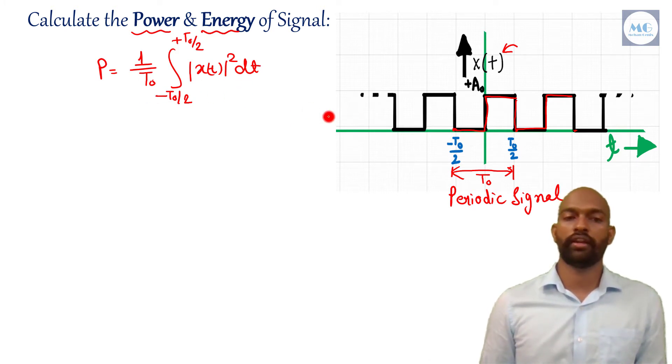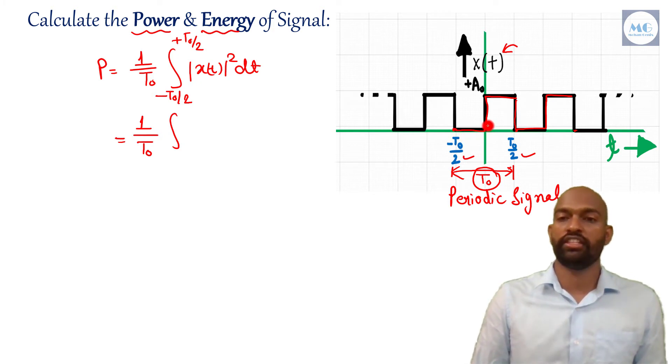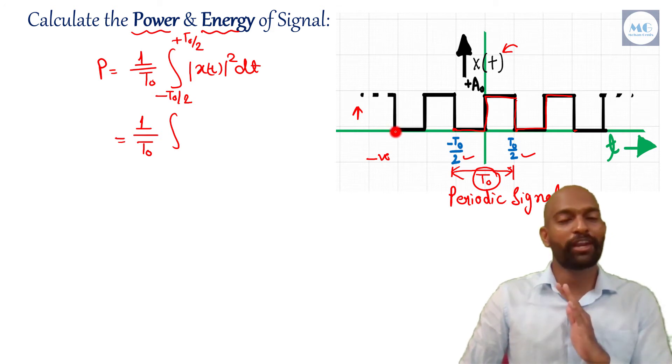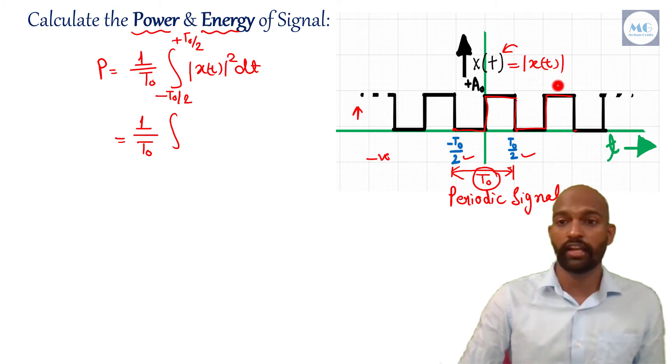Now we have to apply this formula here. Here t0 is same as this t0, that means fundamental time period is t0 only as given in this question, minus t0 by 2 plus t0 by 2. So in place of t0, we just have to write t0. And from minus t0 by 2 to plus t0 by 2, what is the value of mod of xt? We have to find mod of xt. We just have to shift our signal from negative axis to positive axis. But this signal is already in positive side, so here we don't have to do anything. That means xt is equal to mod of xt for this signal. So focus on this formula.